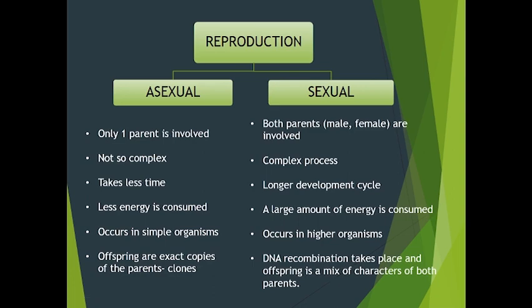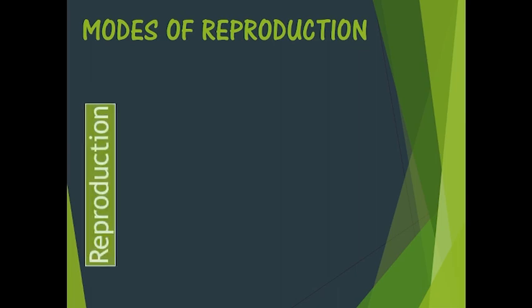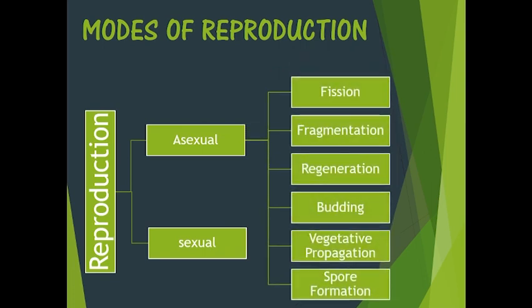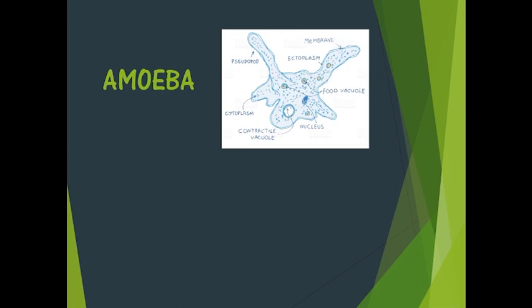Asexual reproduction and sexual reproduction each have their own types. Asexual reproduction can be categorized into six different categories: fission, fragmentation, regeneration, budding, vegetative propagation, and spore formation. These are the six categories, and that is our topic for today's class. We will be dealing with the asexual mode of reproduction; sexual mode of reproduction will be covered in the next class.